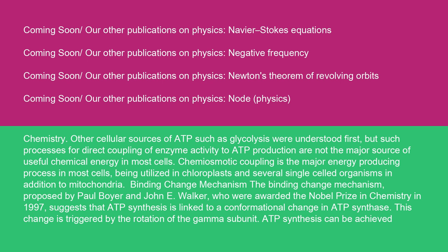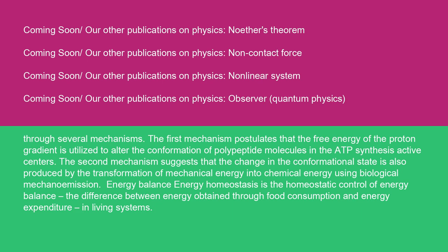The binding change mechanism, proposed by Paul Boyer and John E. Walker — who were awarded the Nobel Prize in Chemistry in 1997 — suggests that ADP synthesis is linked to a conformational change in ADP synthase. This change is triggered by the rotation of the gamma subunit. ADP synthesis can be achieved through several mechanisms. The first mechanism postulates that the free energy of the proton gradient is utilized to alter the conformation of polypeptide molecules in the ADP synthesis active centers. The second mechanism suggests that the change in conformational state is also produced by the transformation of mechanical energy into chemical energy using biological mechanoemission.